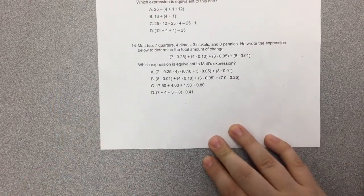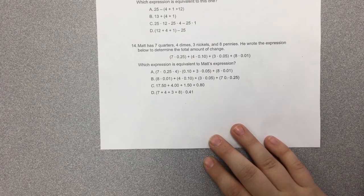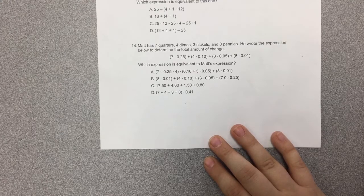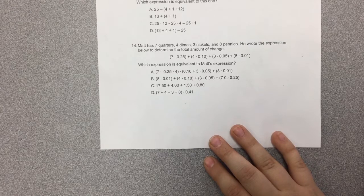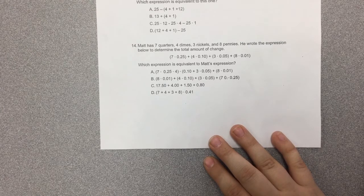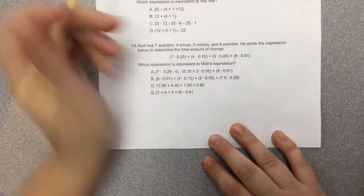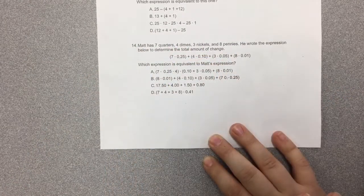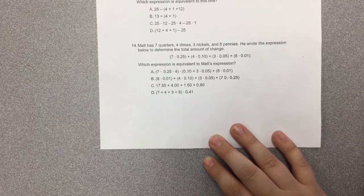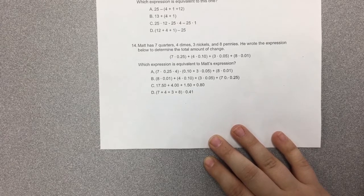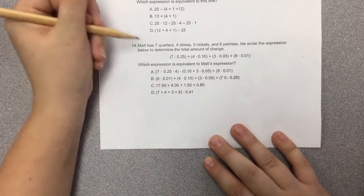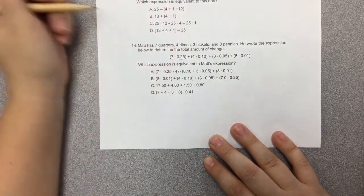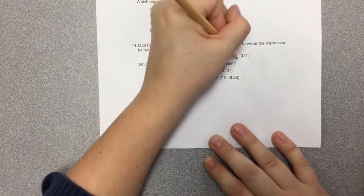Matt has 7 quarters, 4 dimes, 3 nickels, and 8 pennies. He wrote the expression below to determine the total amount of change: 7 multiplied by 25 cents, 4 multiplied by 10 cents, 3 multiplied by 5 cents, plus 8 multiplied by 1 cent. So remember you're adding all of these. You can switch their order, you can switch the order within the groupings, but if you change your groupings, you're going to end up multiplying and adding different numbers that will give a completely different result because the order of operations will be changed. So you can try and solve it completely, or you can just look for your different pieces and make sure that they're together like we did on Monday.